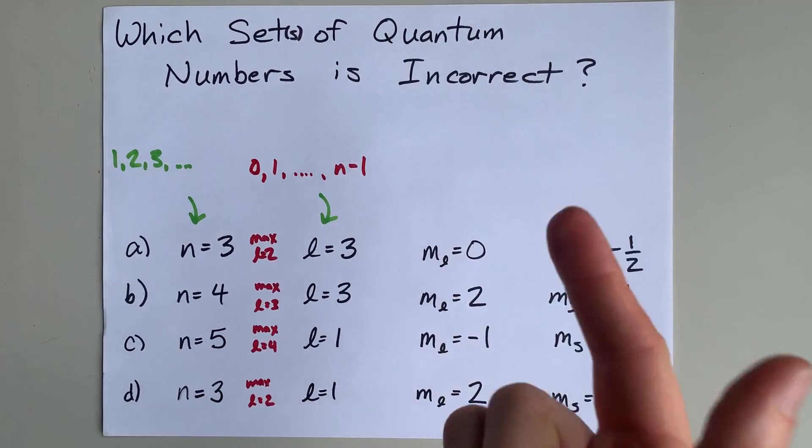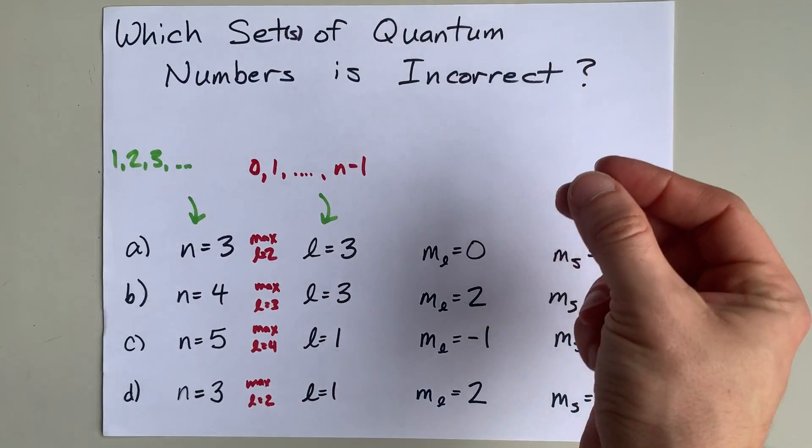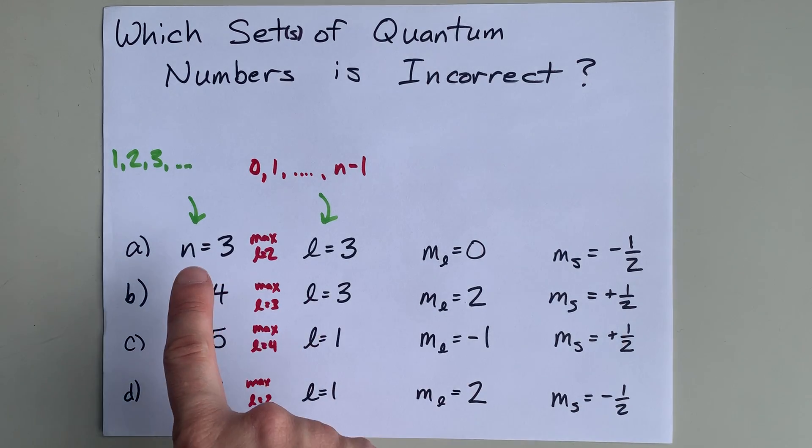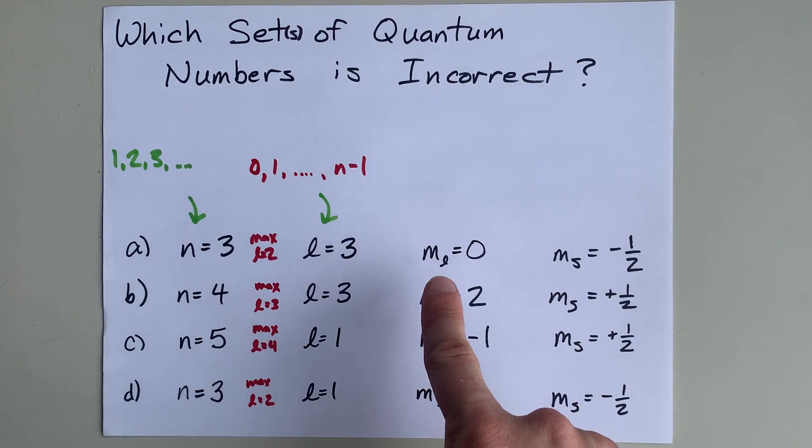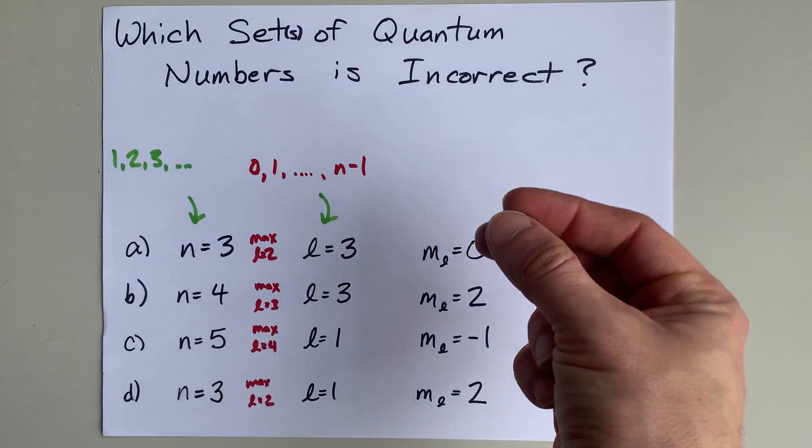Nothing makes a teacher happier than asking you which sets of quantum numbers are incorrect. Now, you're going to be given sets of numbers: an N, an L, an ML, and an MS. These are the four quantum numbers for an electron in an atom.